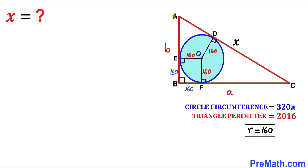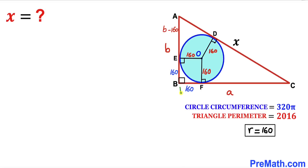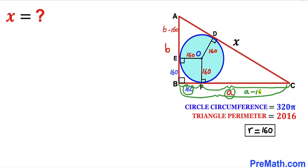Now let's make an observation. The whole side length AB is b, and the segment EB is 160, so side length AE is going to be b minus 160. Likewise, the whole side length BC is a, and segment BF is 160, so side length FC is going to be a minus 160.